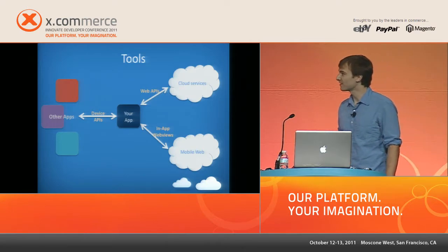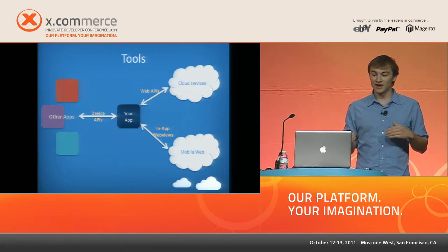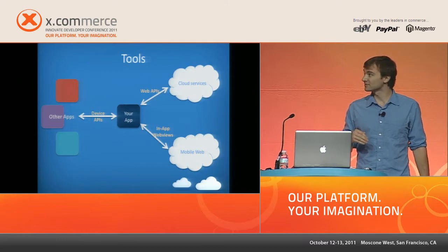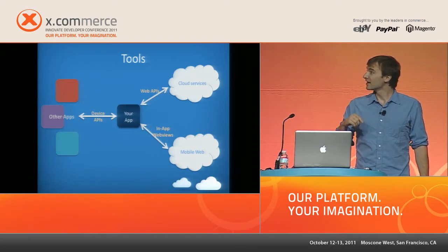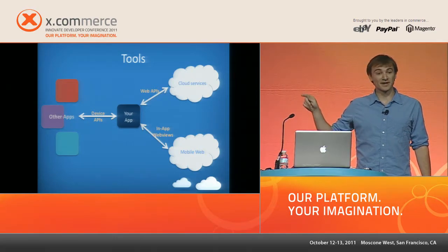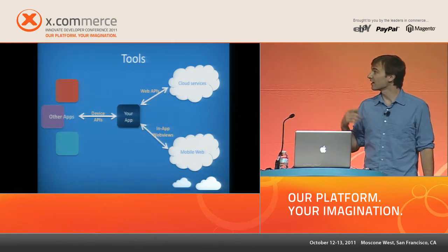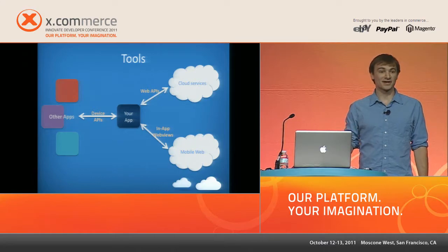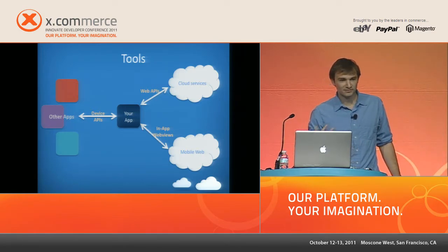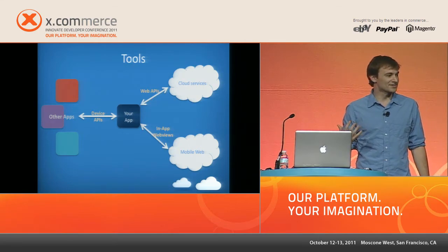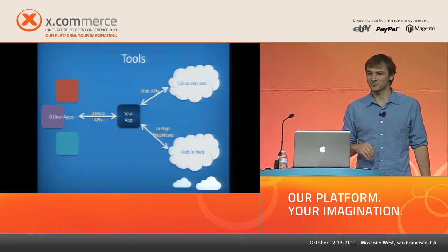I've broken it out into three forms of interaction between applications. First, communication between your app and other apps on the device — those happen through device APIs. Second, web APIs, which allow you to communicate with other cloud services. Third, in-application web views that you can use to render content from your website or other websites. I'll focus mainly on iOS and Android, since those are the two most popular platforms right now.